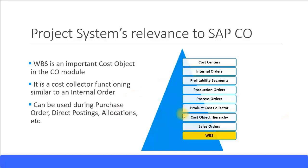Now let's look at the relevance of Project Systems to the SAP Controlling module. The list of cost objects for SAP CO includes cost centers, internal orders, profitability segments, production orders, process orders, product cost collectors, cost object hierarchy, and sales orders. There is another cost object called WBS, commonly known as Work Breakdown Structure, which belongs to the Project Systems module.